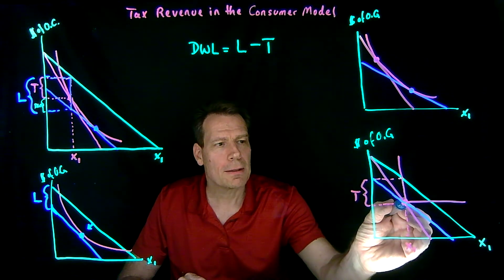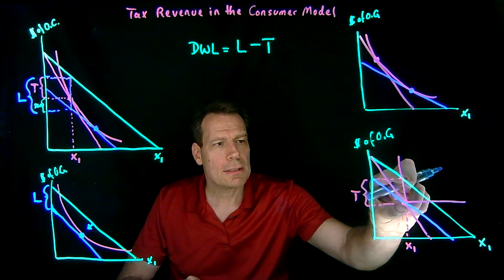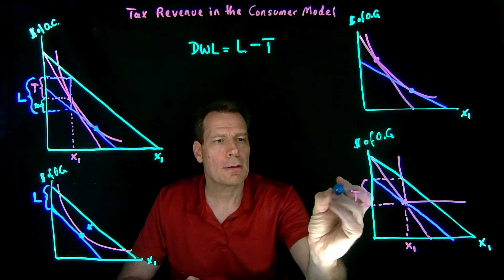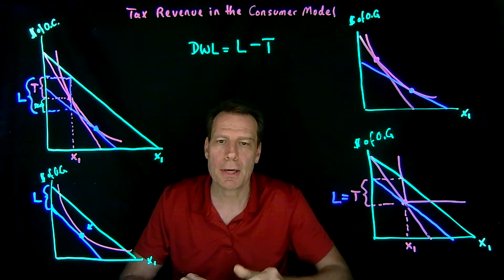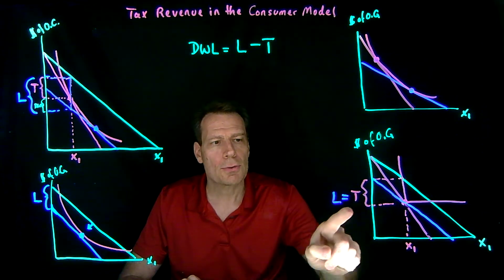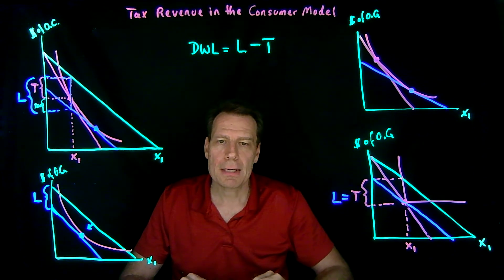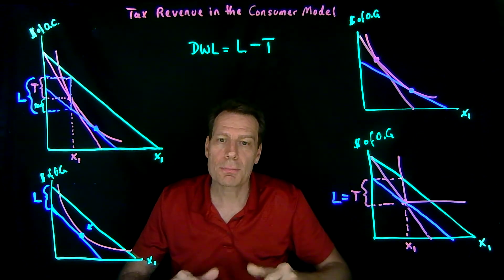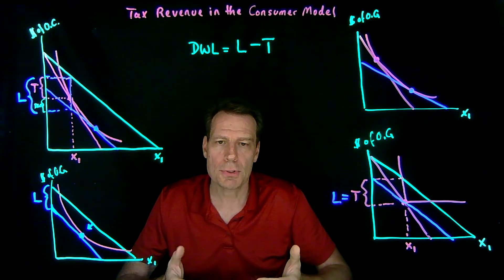Now we see that the blue line crosses at the tangency — it doesn't pass underneath it. The vertical distance between these parallel lines is the lump-sum tax, and the most we could take from you in cash without distorting prices and not making you worse off is exactly what we raised under the distortionary tax. The deadweight loss goes away when we remove the substitution effect by using perfect complements. The bottom line: deadweight loss from distortionary taxes on the consumer side emerges solely because of substitution effects — that's all.